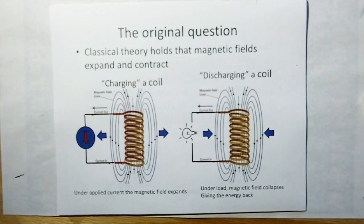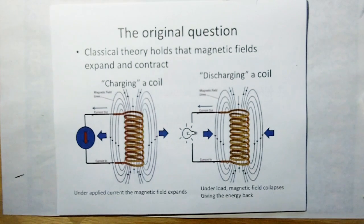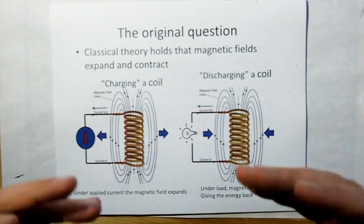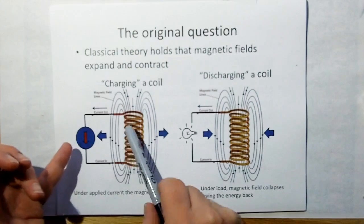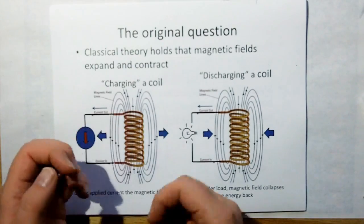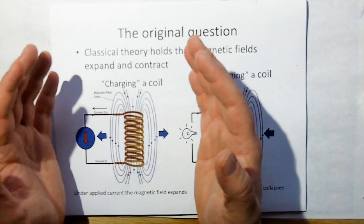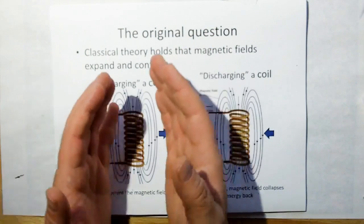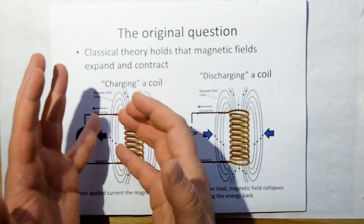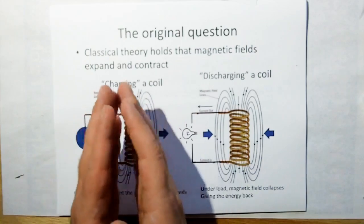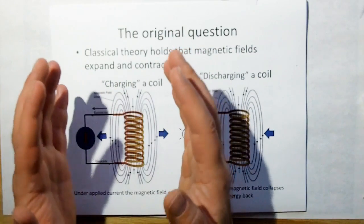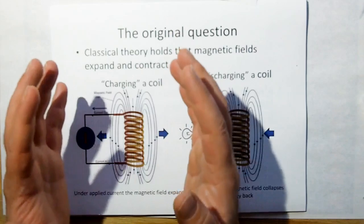The original question came from when I was looking at magnetism: does a magnetic field actually expand and contract like classical theory holds? To show you what classical theory holds — over here we have a current source which is pushing current into a coil. As you push more and more current into the coil, the intensity of the magnetic field gets larger. We assume that the field is expanding because if there were no current in the coil, the magnetic field would be zero. So essentially it's expanding from zero, and that's the way in classical theory we hold that magnetic fields originate.